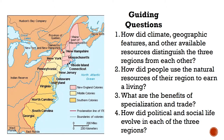Today's lesson we will be answering the four guiding questions. One, how did climate, geographic features, and other available resources distinguish the three regions from each other? Two, how did people use the natural resources of their region to earn a living? Three, what are the benefits of specialization and trade? And four, how did political and social life evolve in each of the three regions?